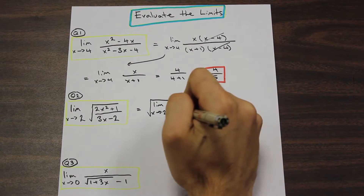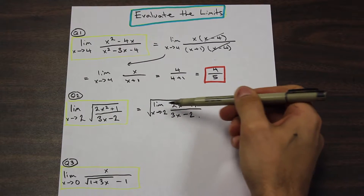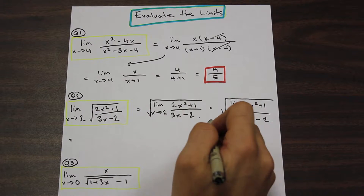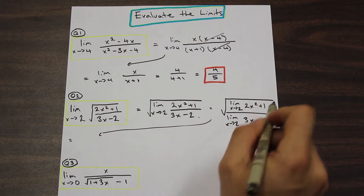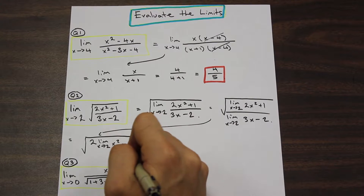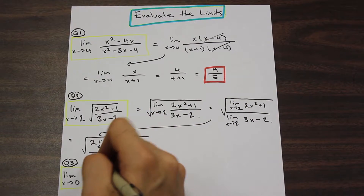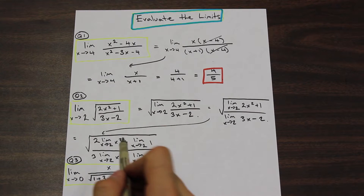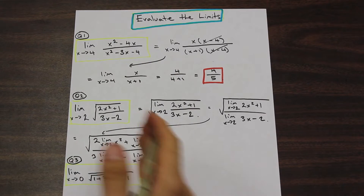Using limit law five, we can apply the limit as x approaches two to the top and bottom of the fraction separately. Then, using limit laws one, two, and three, we apply the limit to each piece: two times the limit of x squared, plus the limit of one on top, and the same treatment on the bottom. Make sure you write those limit laws out, because your teacher will most likely penalize you if you don't. We've now broken it down as much as we can.